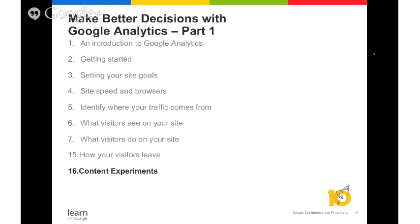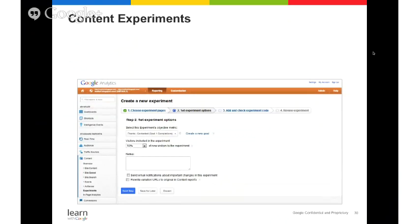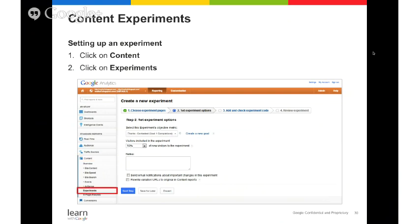Finally, let's talk about content experiments — a great way to wrap together everything we've discussed. Experiments allow you to test how well different versions of your pages work in getting visitors to accomplish specific goals. To set up an experiment, click Content and then Experiments. You can test up to five variations of a page to see which drives the most conversions, define what percentage of visitors are included, choose which objective to test, and get email updates. We'll go into more detail on A/B testing and user experience in Week 8.